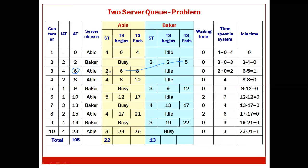The fourth customer arrives at minute 8, exactly when Able's previous service ends. Able is immediately free and takes the call. Baker remains idle. With service time 4, time service ends is 8 + 4 = 12. No waiting time; time spent in system is 4. Idle time is 8 minus 8 = 0.